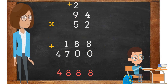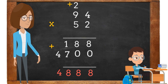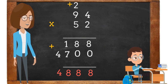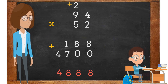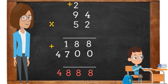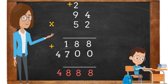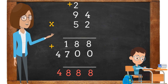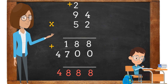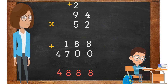Lastly, we are going to add. 8 plus 0 is 8. 8 plus 0 is 8. 1 plus 7 is 8. We do not have a number above the 4 in the thousands place, so we are going to bring the 4 down. The answer is 4,888.